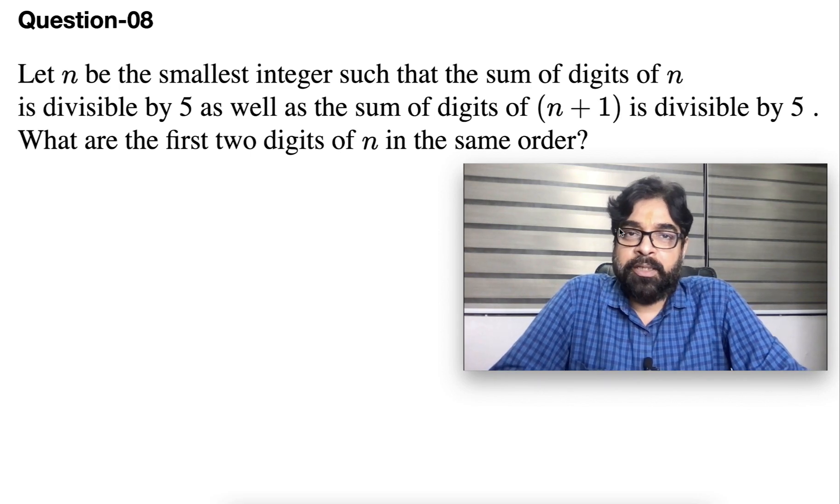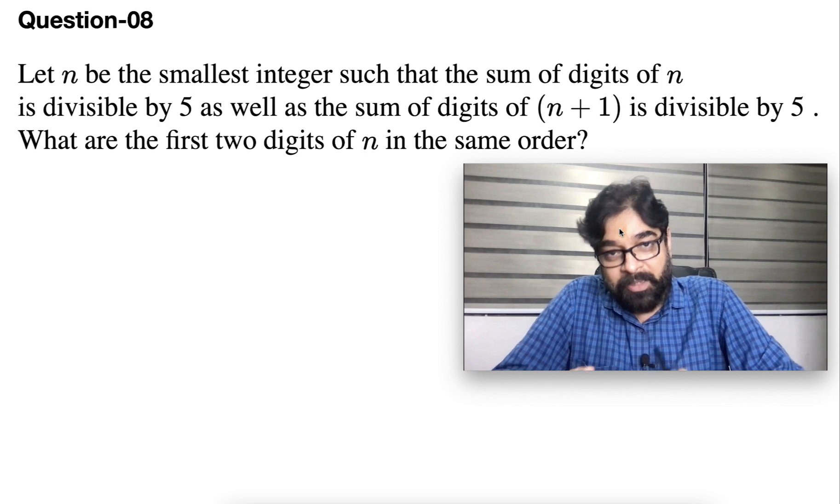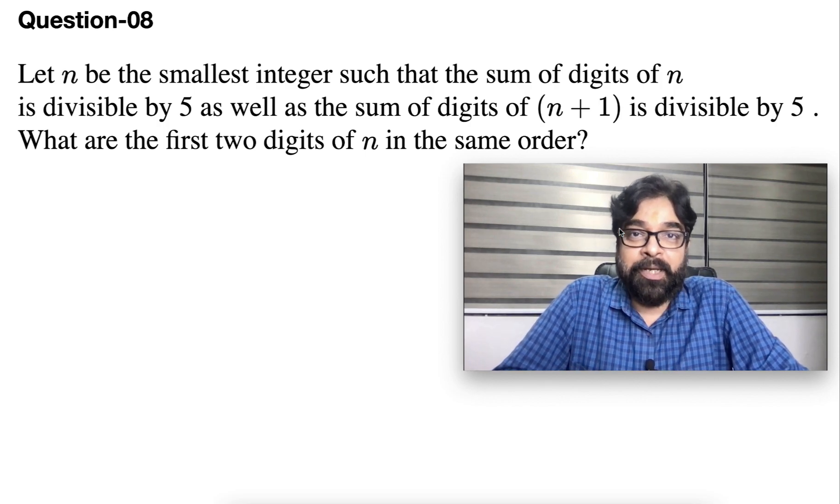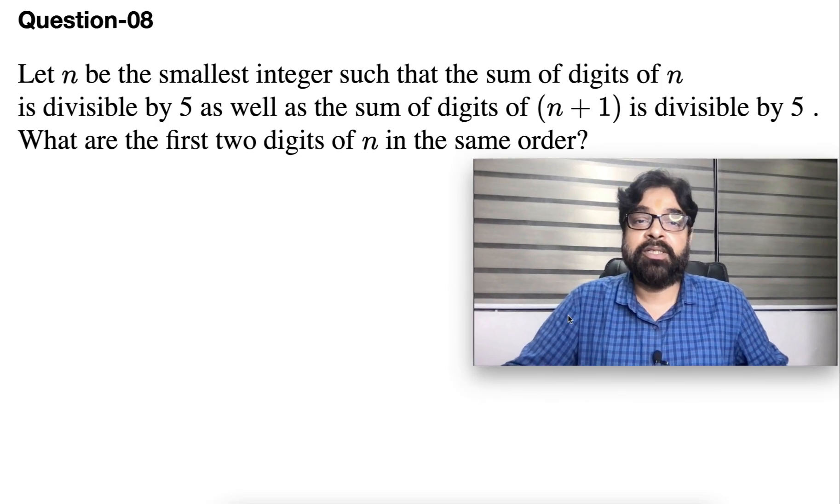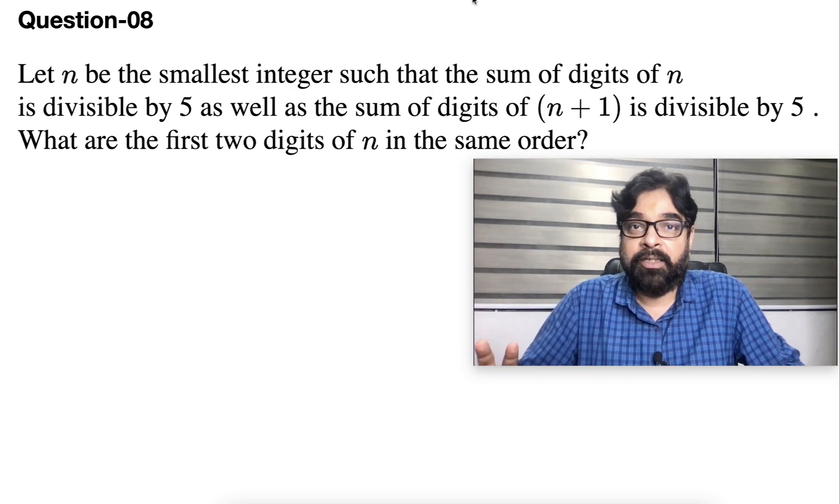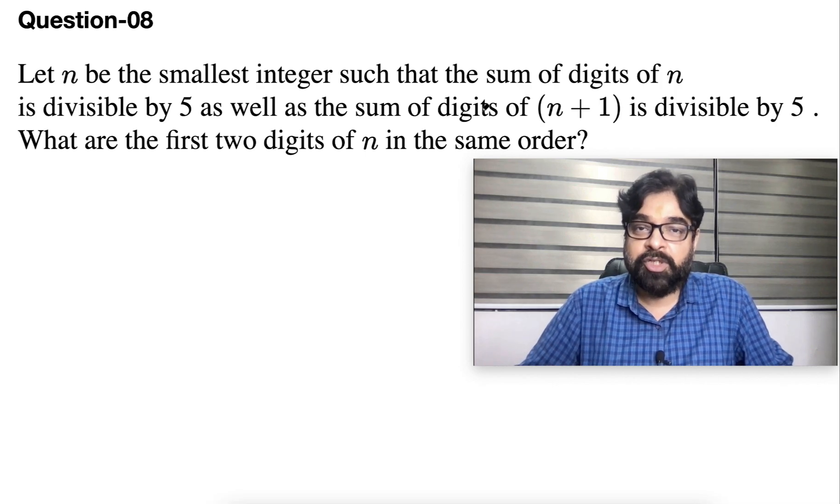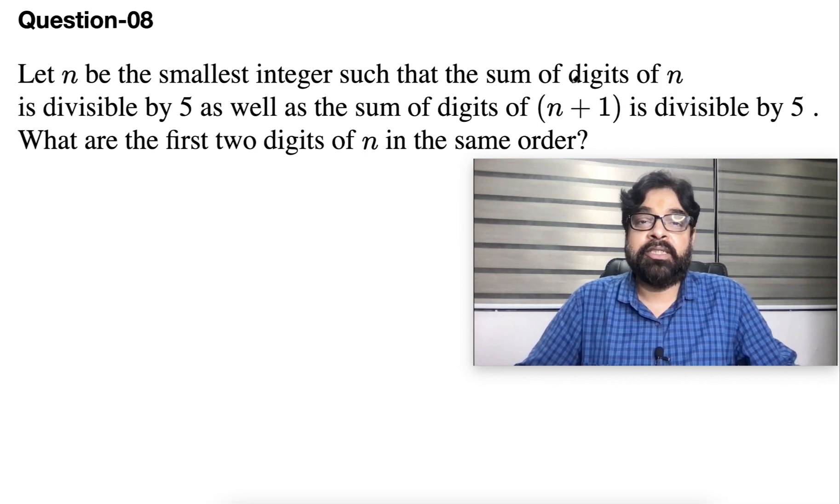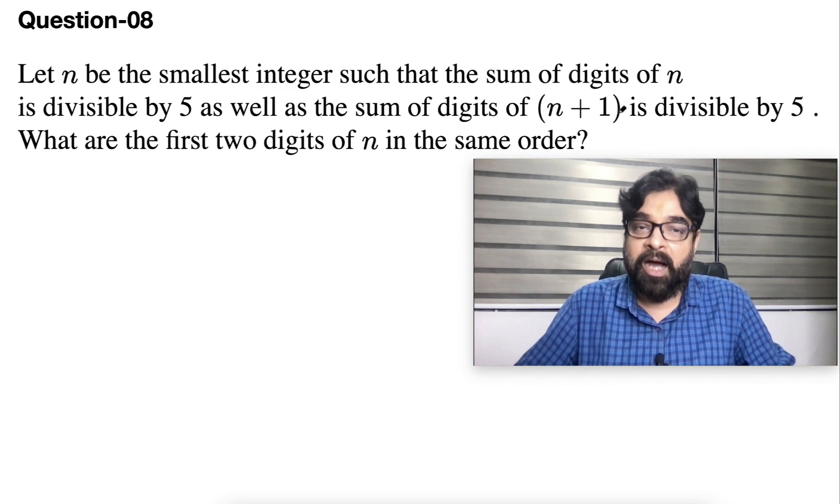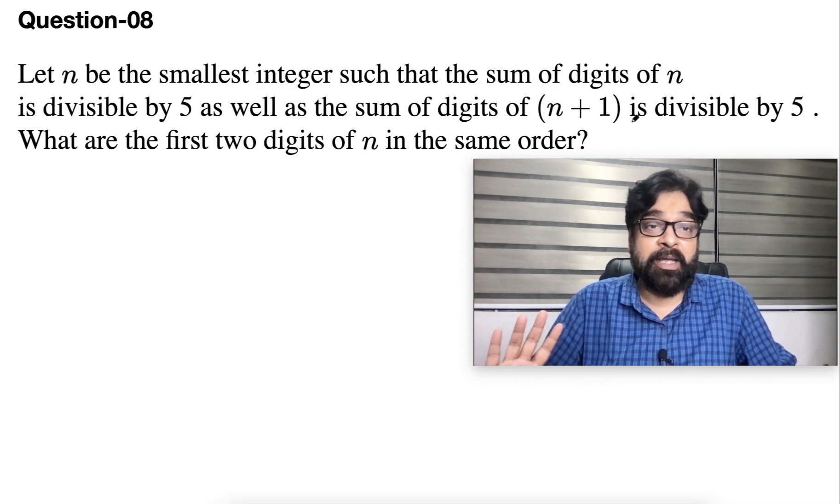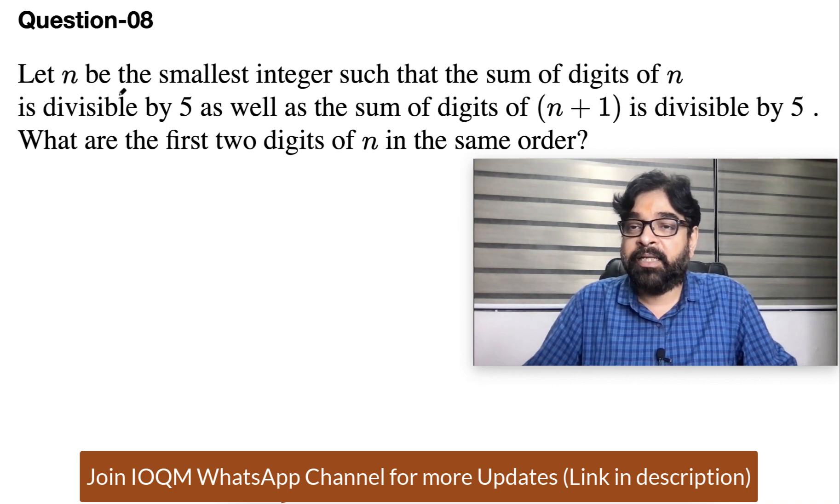This is one of the beautiful questions in the first two marks, not very tough but yes you have to apply the brain for this particular question. This is the question which I like very much in the two marks section. Let's understand what is the meaning of the question: n is the smallest integer such that the sum of digits of n is divisible by 5 as well as sum of digits of n+1 is also divisible by 5.